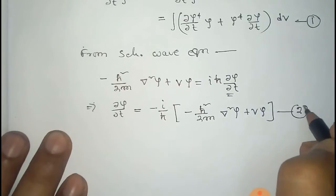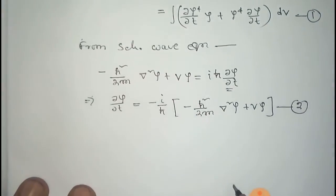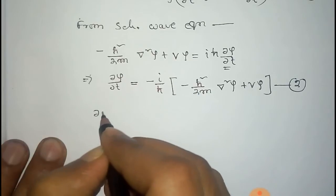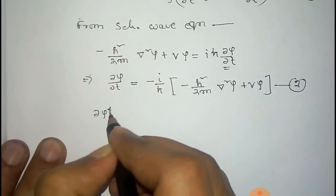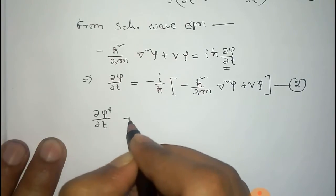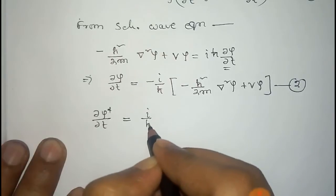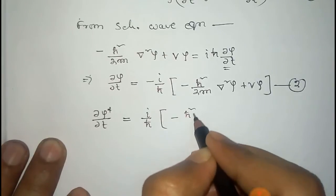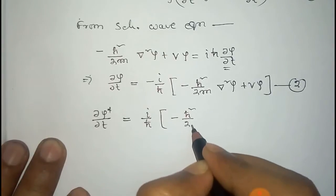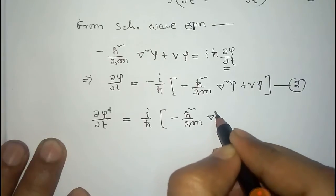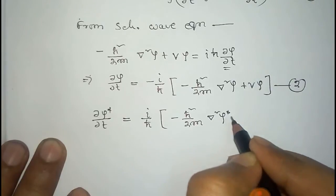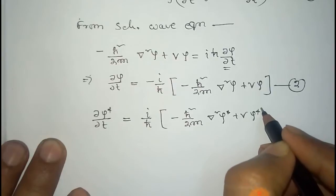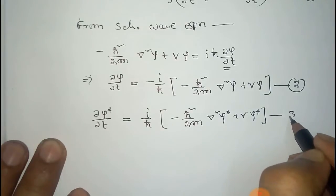Taking the complex conjugate of equation number two, we get ∂ψ*/∂t equals (−i/ℏ) times [(−ℏ²/2m)∇²ψ* + Vψ*]. We take this as equation number three.